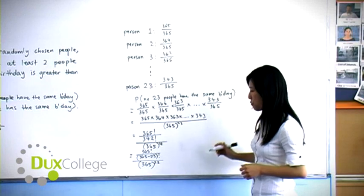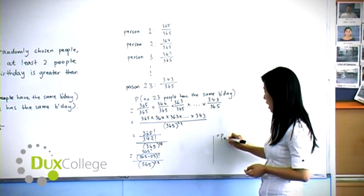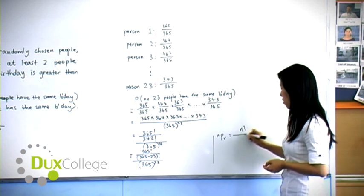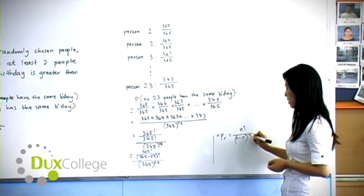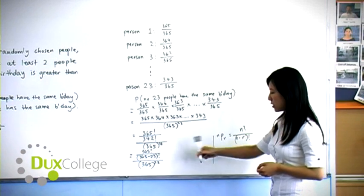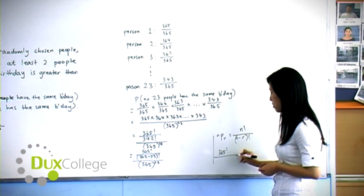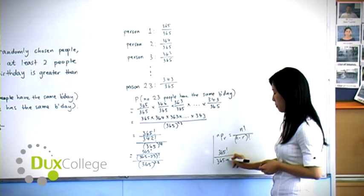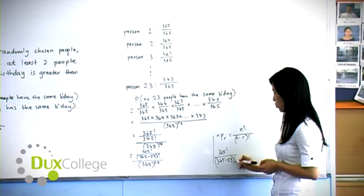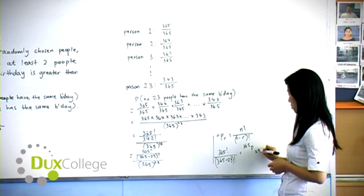If you remember from permutation, nPr is equal to n factorial over n minus r factorial. So linking this with what we have on the top, 365 factorial over 365 minus 23 factorial is exactly equal to 365P23.